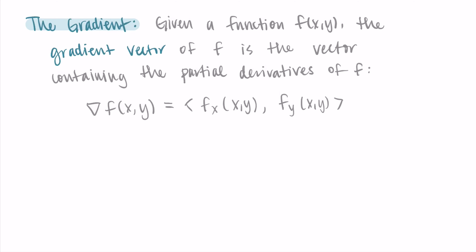We can also evaluate the gradient vector at specific points, such as at a point (a, b), where we substitute x equals a and y equals b into both of our partial derivatives. I'll show you that in the example later.